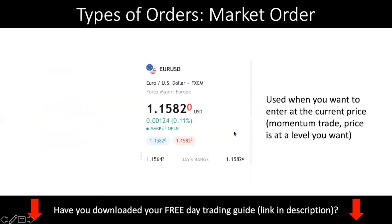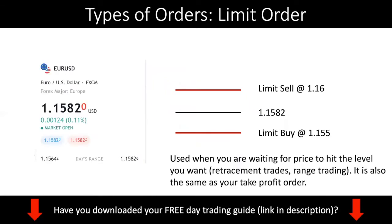So if price is over here right now and it goes down, comes back up, and doesn't hit your limit order at 1.155, what happens is you miss out on that trade. That trade would have made you money if you had gotten in. So that is the risk of using a limit order — it allows you to get the best prices, to get the trade at the price that you want, but it does not guarantee execution.